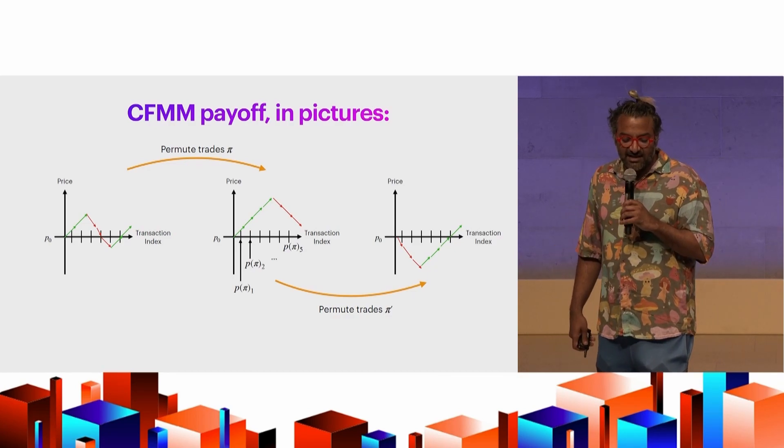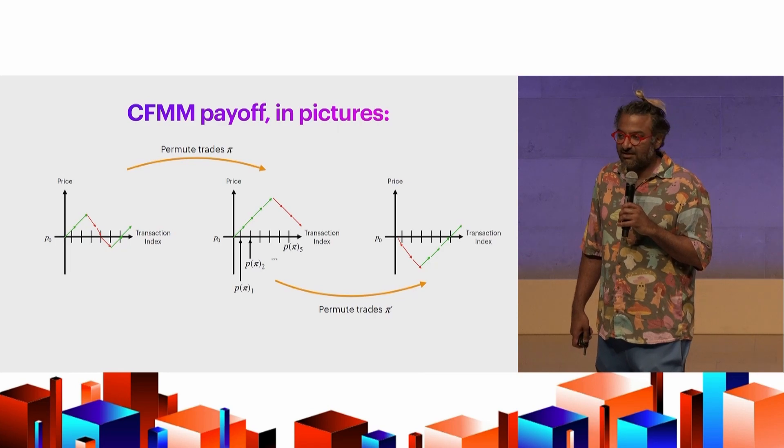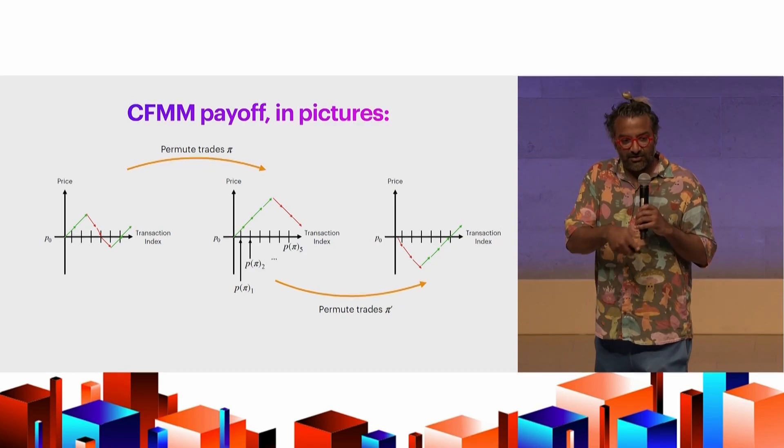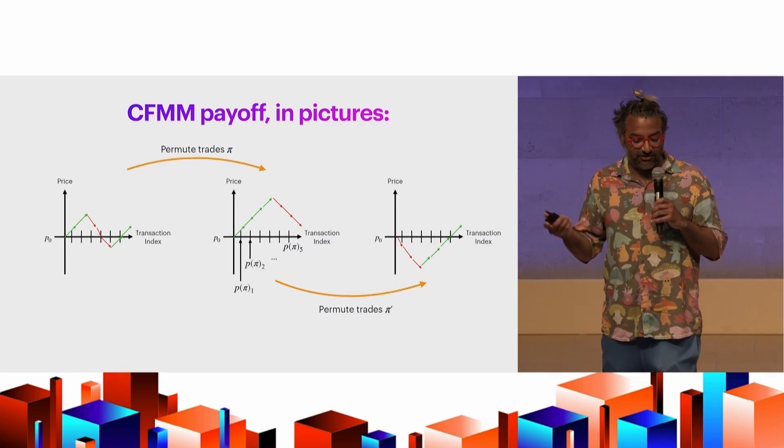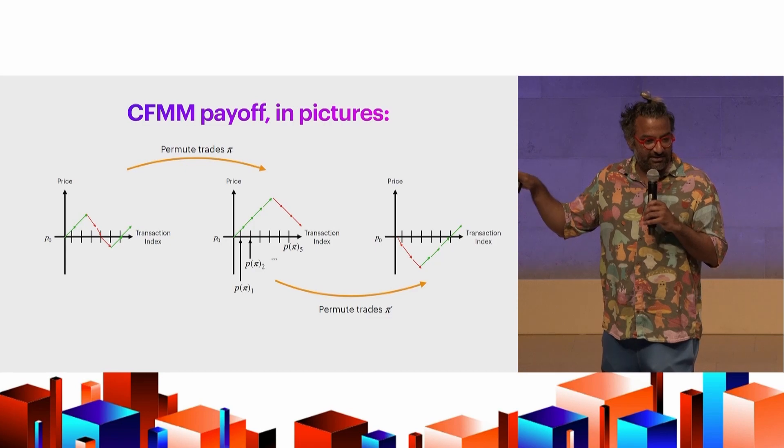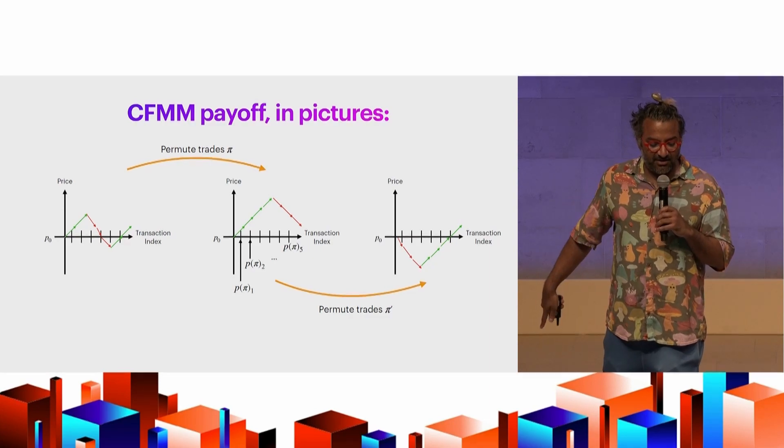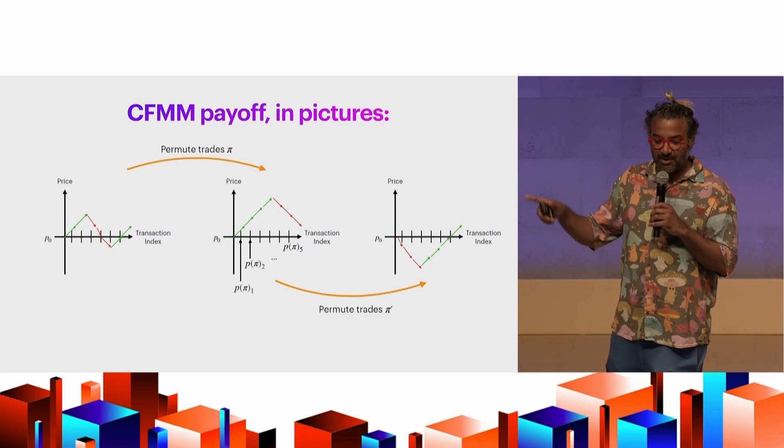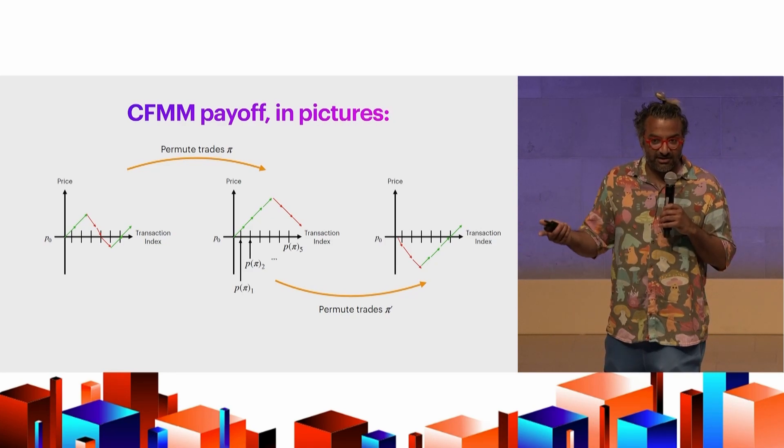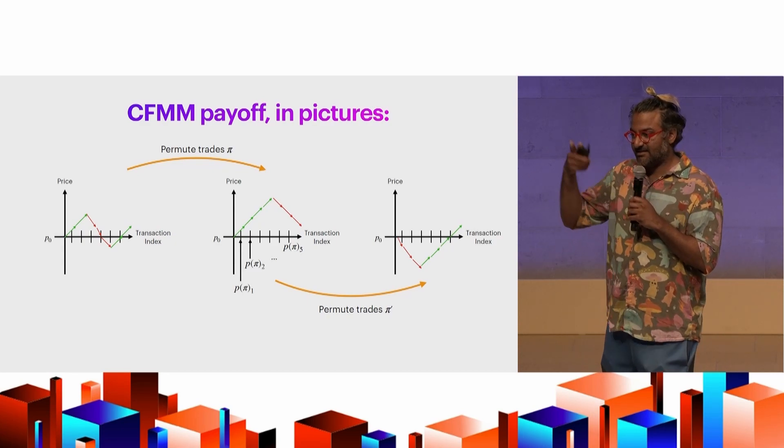So let's maybe try to demonstrate this in pictures. So we take an AMM, like a Uniswap, a CFMM, and now consider a set of transactions. There are seven transactions here. And there are four transactions that are price goes up one unit. Those are the green bars. There are three transactions that are price goes down one unit. And as you can see, if I permute the green and red arrows, I get different price trajectories, right? And so you can see the first one sort of is like, you know, up, up, down, down, down, up, up. And then the second one is up, up, up, up, down, down, down. And at each point, you can say, given a permutation, here's the price trajectory created by this ordering.